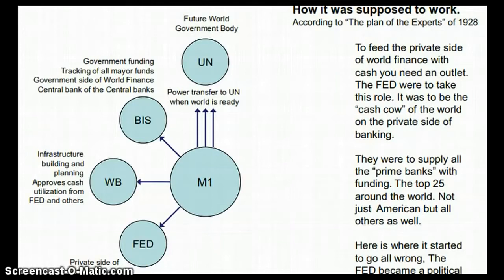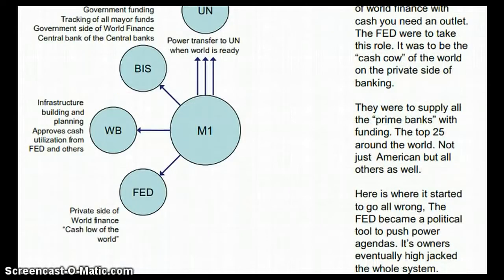To feed the private side of world finance with cash, you need an outlet — the Federal Reserve was taken into this role. It was to be the cash cow of the world on the private side of banking, supplying all prime banks with funding — the top 25 around the world, not just America. But here is where it all started to go wrong: the Fed became a political tool to push power agendas, and its owners eventually hijacked the whole system.